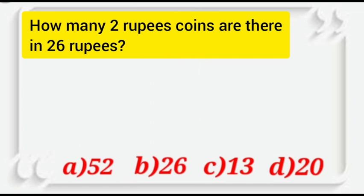The 4 options are, option A is 52, option B is 26, option C is 13 and option D is 20.